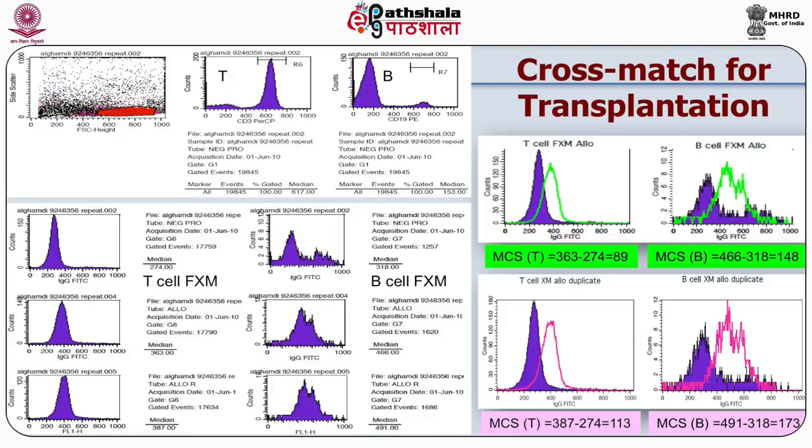Flow cytometry can be used to crossmatch a recipient's serum with donor lymphocytes to detect antibodies that could interfere with engraftment. Prior to organ transplantation, the donor's lymphocytes are incubated with serum from the potential recipient. After washing, bound immunoglobulins are detected using FITC-conjugated anti-human IgG antibodies, and T cells are identified using a PE-CD3 conjugate.